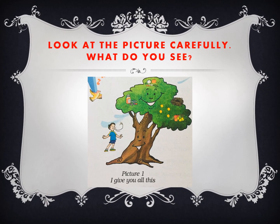Children, look at the picture carefully. What do you see? If you look at the tree carefully, you will see that the tree is smiling. There is a boy who is breathing fresh air. The tree gives us fruits, vegetables, and medicines. Not only human beings, but also other animals and birds benefit — for example, we can see a nest, which is the home of birds.